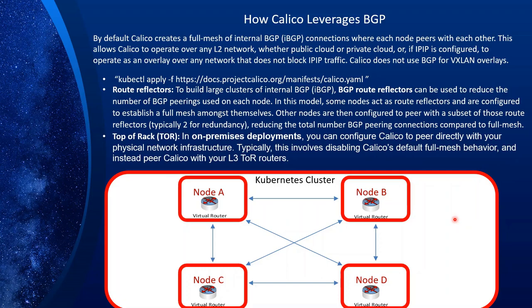If we set up Kubernetes on our own premises with full control, we can configure Calico to peer directly with our physical network infrastructure. Typically, we disable Calico's default full mesh behavior and instead peer Calico with our L3 top-of-rack router. So we have a number of options: for a small network, use full mesh as is; as it grows, choose route reflectors; and the best option — if we have full control over our environment and hardware that supports top-of-rack — is to configure our network for top-of-rack BGP peering.